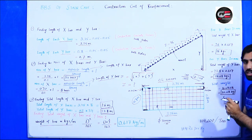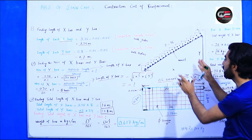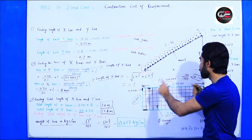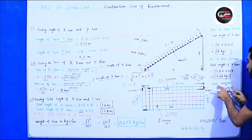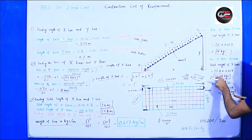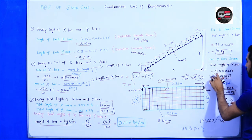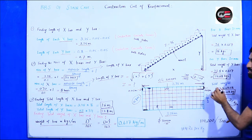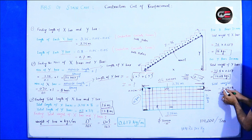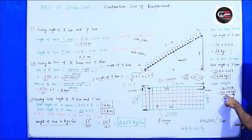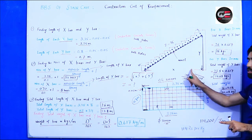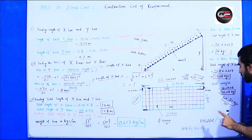Total weight of steel bar required for this staircase (width 0.8 m, length 3.25 m): 16 + 14.68 = 30.68 kg, which we can round to approximately 31 kg of steel bar.